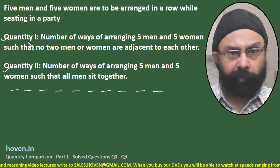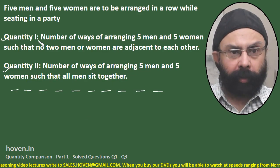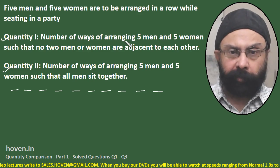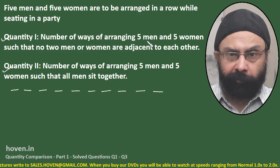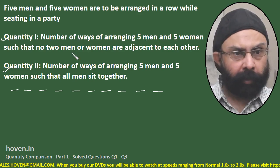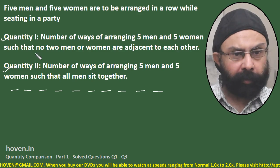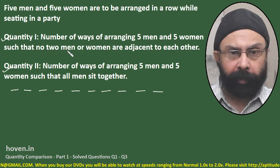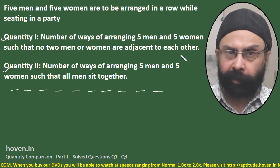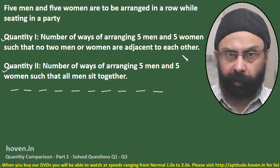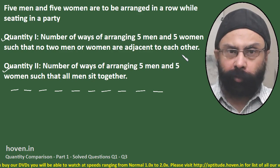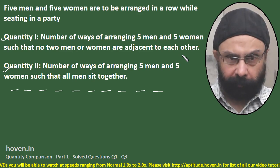Quantity 1 requires finding the number of ways of arranging 5 men and 5 women such that no two men or women are adjacent to each other — that is, they have to be seated alternately.